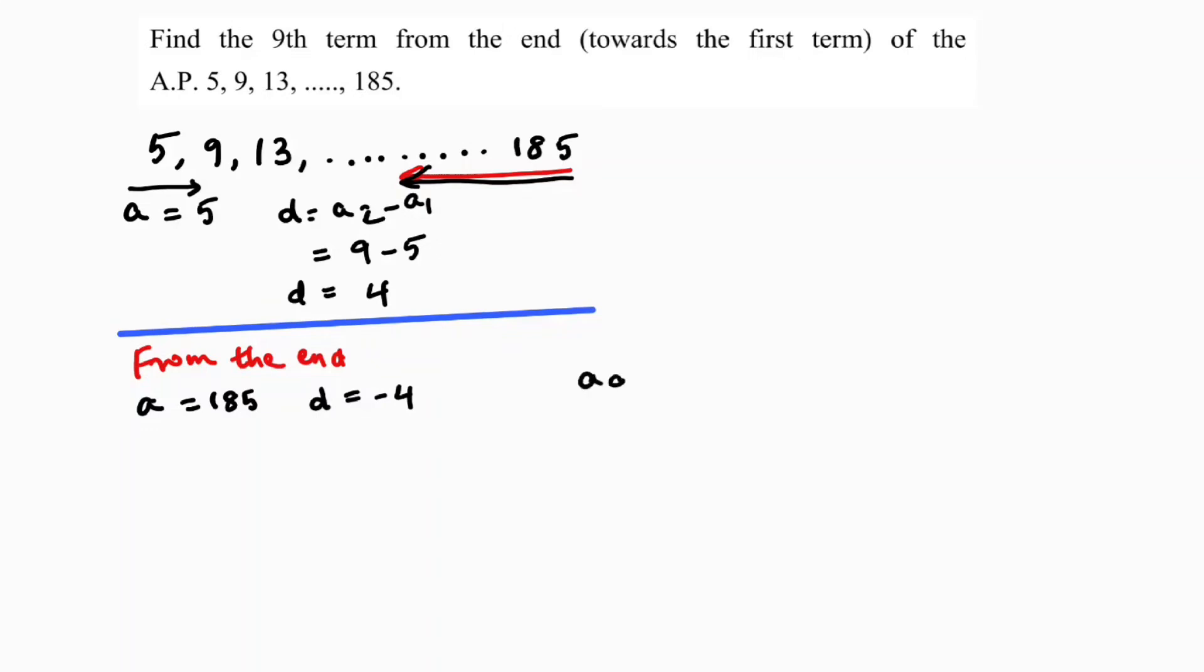So a9 is a plus 8d because nth term of an AP, the formula is a plus n minus 1 into d. a9 is a plus 9 minus 1 into d, which is a plus 8d. Now from the end, the first term is 185 and common difference is minus 4.